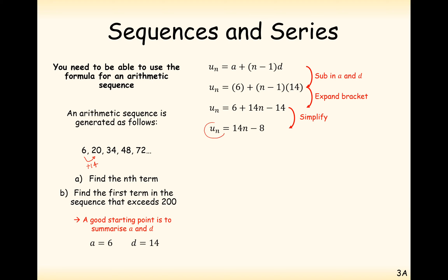Now what's this symbol at the front — u subscript n? What we've done is given all terms in our sequence a u number: u1 is 6, u2 is 20, u3 is 34, and so on. u_n is given by 14 times the position n you're at, minus 8. So the n number represents the position in the sequence, and we just multiply by 14 and subtract 8.